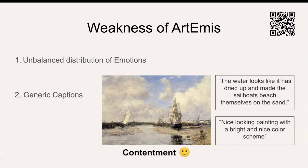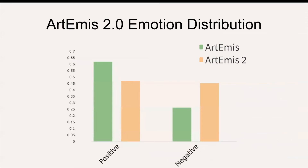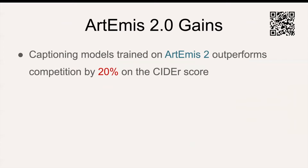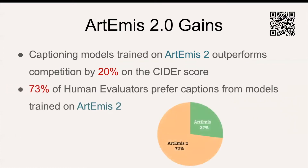We aim to overcome these weaknesses by proposing a contrastive data collection approach and use it to create a complementary dataset where we collect contrasting emotions for visually similar paintings. Our new dataset, Artemis 2, has a more balanced distribution of emotions. Moreover, our contrastive approach encourages the annotators to enrich the dataset with new emotional experiences. This leads to a significant gain when training captioning models on Artemis 2, where we observe an improvement of 20 percent on the CIDR score. Also, 73 percent of human evaluators prefer captions from models trained on Artemis 2.